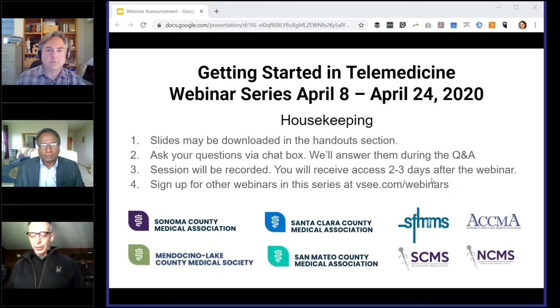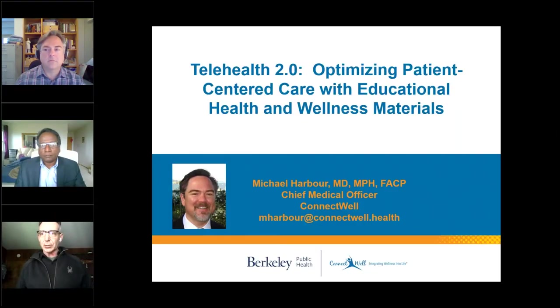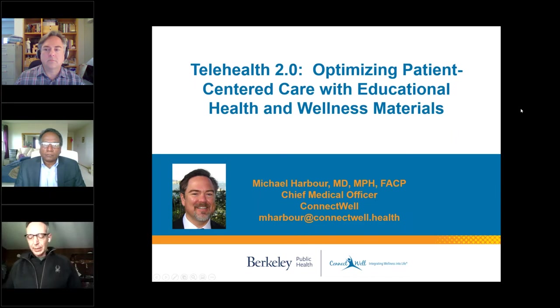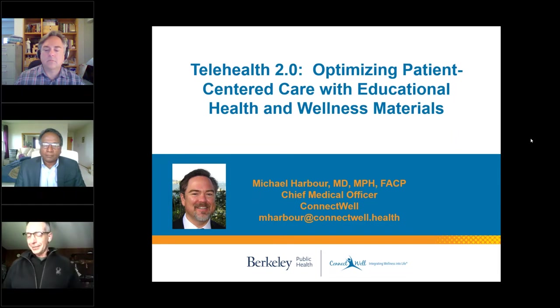Uli is a physician, researcher, author, and innovator. He's currently the president of InnovatorMD, a healthcare innovation company focused on physician entrepreneurism. As a physician scientist, he's interested in technology-enabled care. He received the Pioneer Award for Innovation from Kaiser Permanente and the Morris F. Collin Research Award from the Permanente Medical Group. His other roles include president-elect for the San Mateo County Medical Association and chairman of the Society of Physician Entrepreneurs of the San Francisco Bay Area chapter. He's an advisor, mentor, and investor at various healthcare startups, and author of the book Punish the Machine: The Promise of Artificial Intelligence in Healthcare, available on Amazon. Uli, take it away.